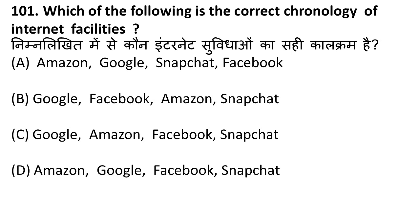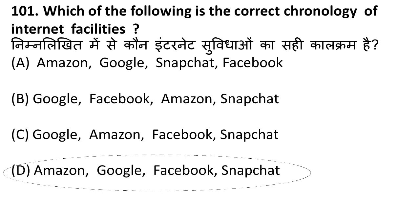Next question: which of the following is the correct chronology of internet facilities — Amazon, Google, Facebook, Snapchat? Amazon was founded in 1994 by Jeff Bezos. Google was founded in 1998 by Sergey Brin and Larry Page. Facebook was founded in 2004 by Mark Zuckerberg. Snapchat was founded in 2011. So the correct chronological order is Amazon (1994), Google (1998), Facebook (2004), Snapchat (2011) — the correct answer is D.